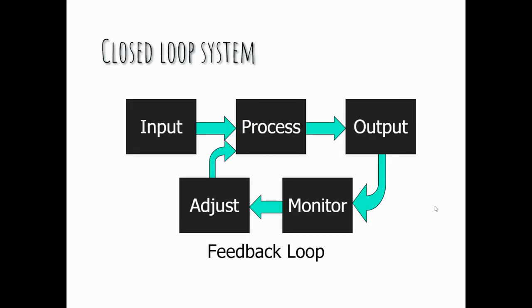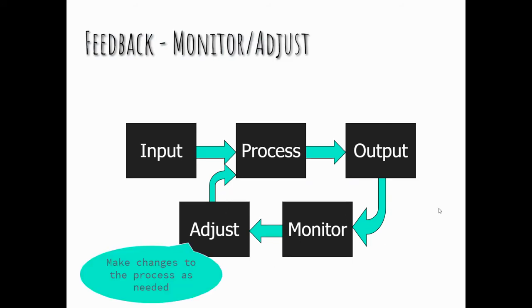The closed loop system is a little different. The closed loop system operates with a feedback loop. The feedback loop contains a monitor and an adjust. These two parts of the system are called a feedback loop.